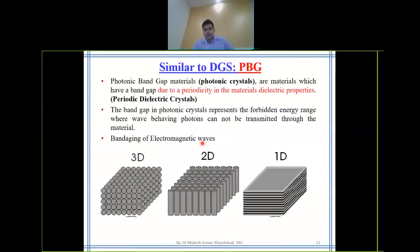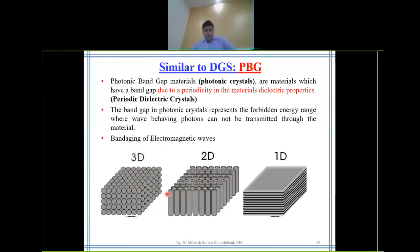PBG — photonic band gap — came into the picture first. In photonic band gap structures, we make the dielectric substrate defective. You can see 3D and 2D structures; in the 2D structure, periodic via holes are made through the substrate. The key point about PBG is that it must be periodic — it is also known as a periodic dielectric crystal.